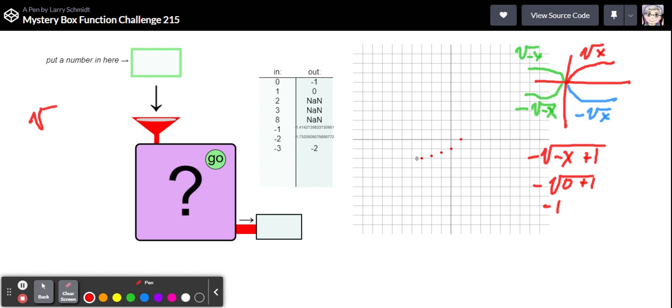Let's try this point right here that's a good one. So that's negative three, so it would be a negative square root of a negative negative three plus one. Well negative negative three is three plus one is four, so the negative square root of four is negative two. That's what we're getting. Okay so I think this is our function.